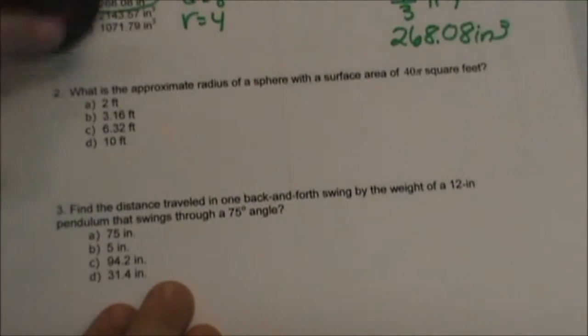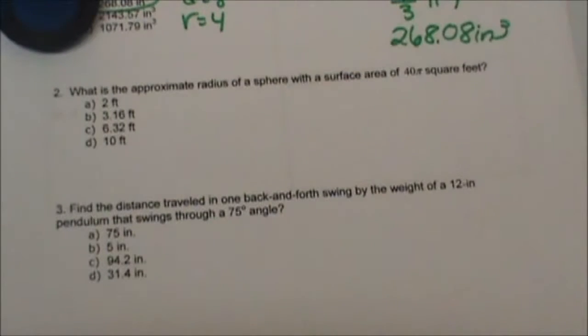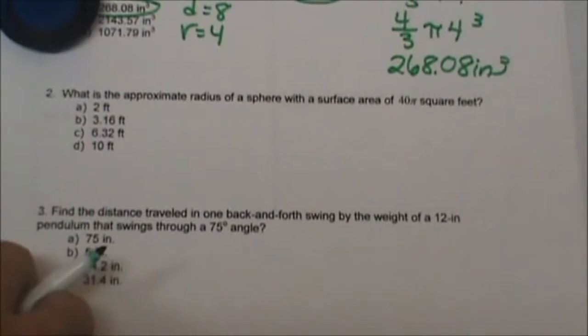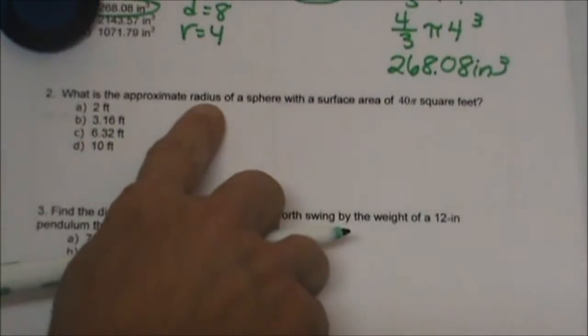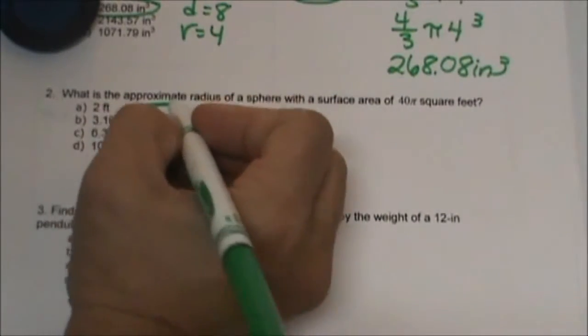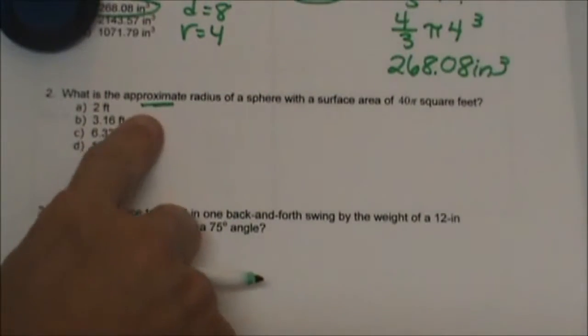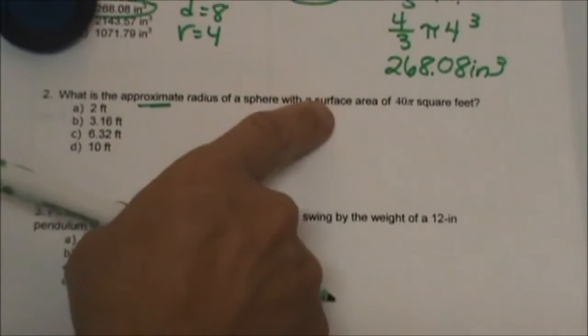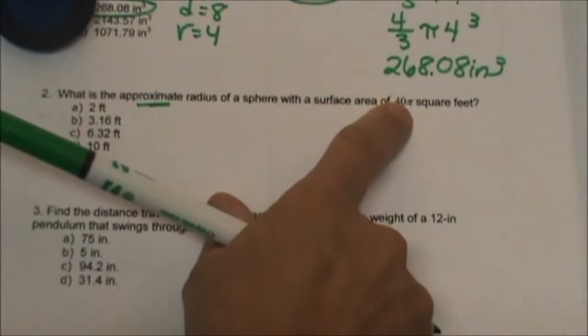Let's look at number 2. What is the approximate radius of a sphere with a surface area of 40π?